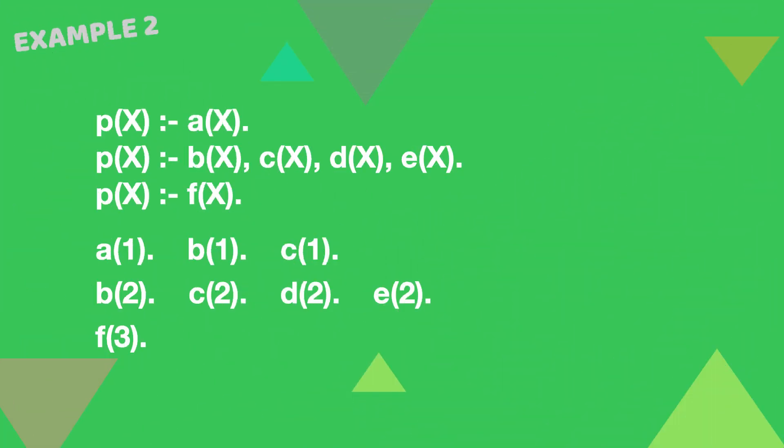Here is a second example with three rules. For the query p(X), this program offers three solutions. But with a cut in the middle of the second rule, the number of solutions is 1.